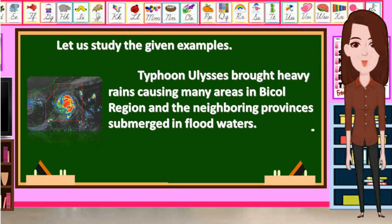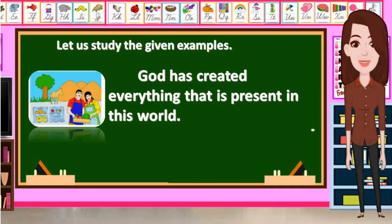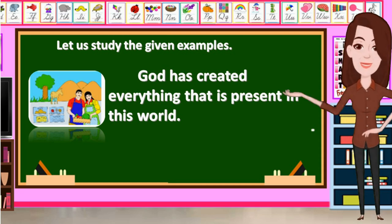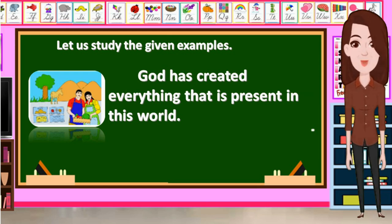Let us study some given examples. Typhoon Ulysses brought heavy rains causing many areas in Bicol region and the neighboring provinces to be submerged in flood waters. This is a statement of fact since you can check with the weather expert to prove it. Another example: God has created everything that is present in this world. This is a fact statement because we can prove it is true by reading documents, particularly the Bible.